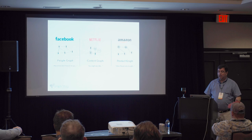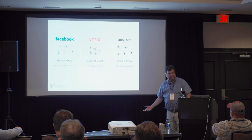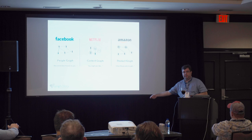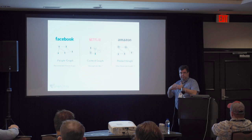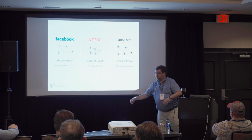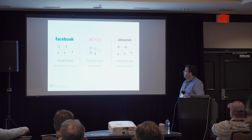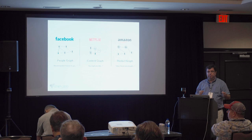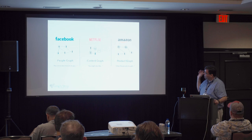Netflix's graph is also about content development. There's a British version of House of Cards, and they realized that people who watched the British version all the way to the end also watched Kevin Spacey movies all the way to the end. That weird connection was evidence to help support putting Kevin Spacey into a show they thought would be successful — and they were right, using a graph. The biggest graph in retail is Amazon — all their product recommendations are based on a huge connection of data in their proprietary graph.